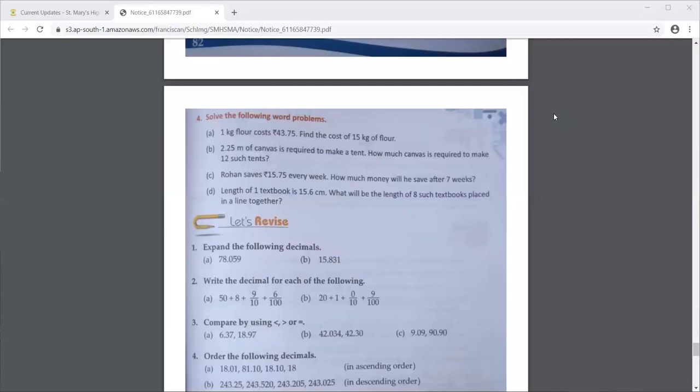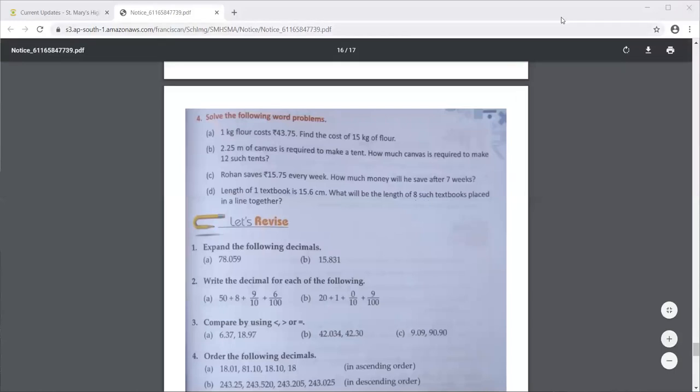Now first of all, 15.6, what do we write? What is the statement for that? Length of 1 textbook, it is given in the question itself. That will be your first statement, length of 1 textbook. And what are you to find out? The length of 8 such textbooks placed in a line together. That itself will be your therefore statement. Therefore the length of 8 such textbooks, placed in a line together. So that will be your therefore statement.